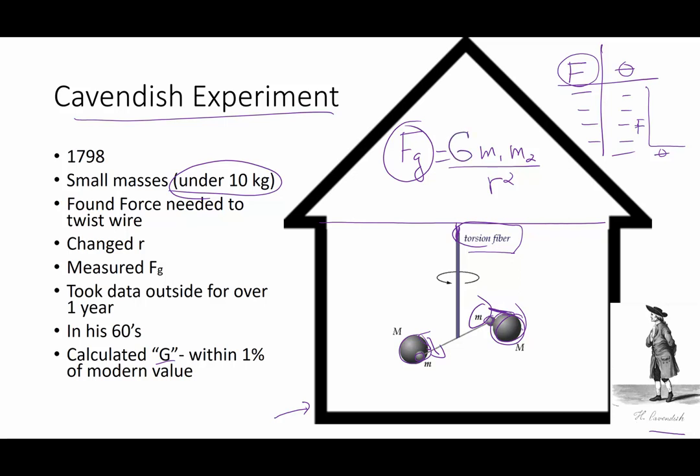He worked on this for years and years and years. And he actually took his data from outside the building and looked through a telescope to see the actual readings on the torsion balance. Why did he work from outside the building? Because of the fact he was a smart man and he knew that his mass would affect the force of gravity on these objects.